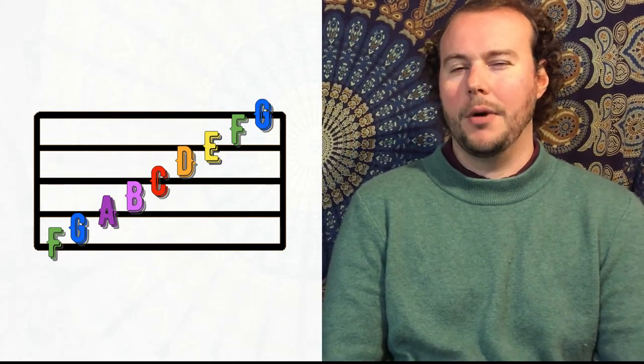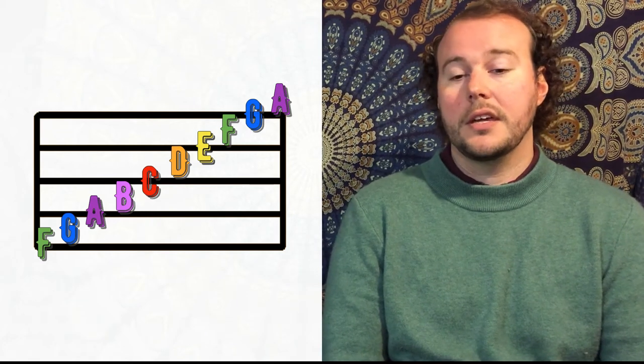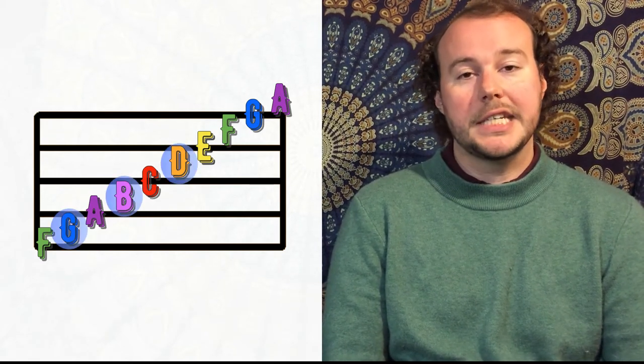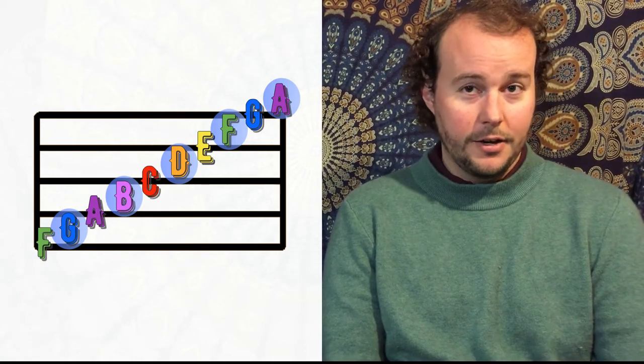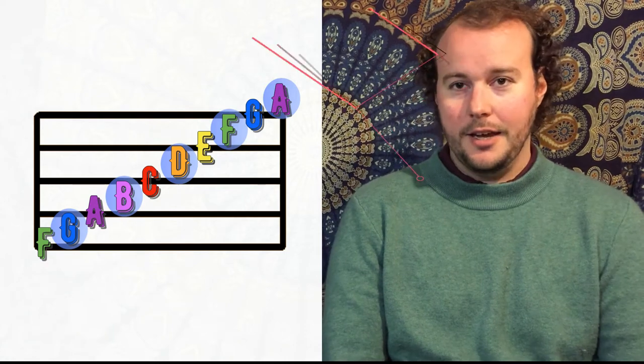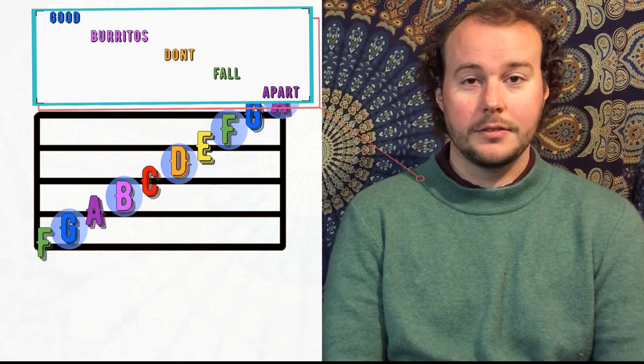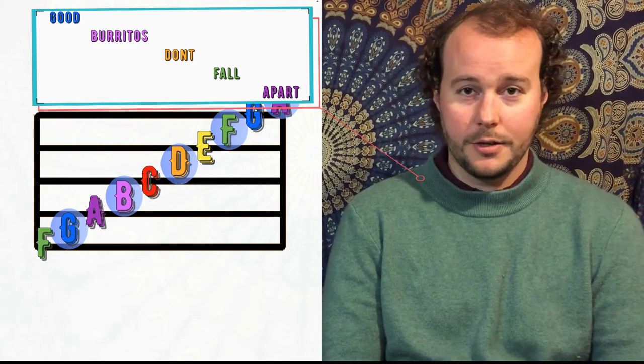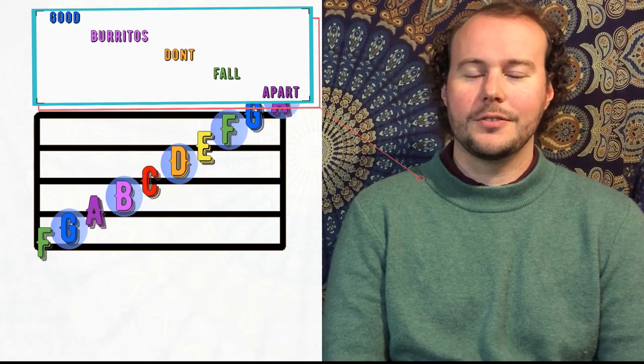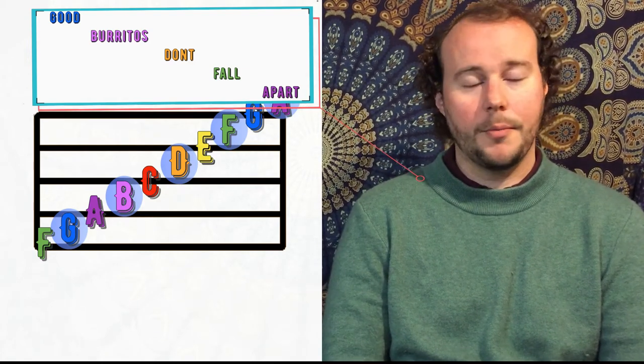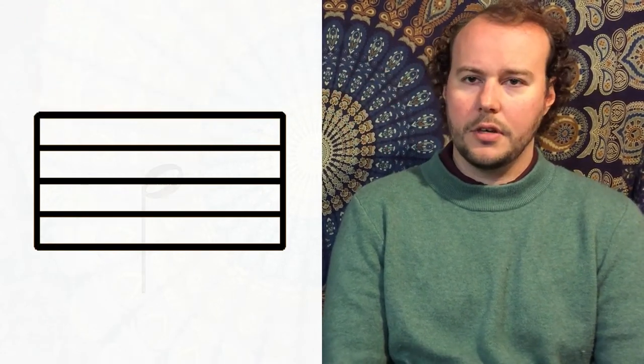If you add in the space above the top line, that is your open A string on your instrument. So if you think G, B, D, F, A, then instead of girls breathe dragon fire, you want something for A. So I like to say good burritos don't fall apart. Right? Nobody likes a burrito that falls apart. It's okay for tacos, but burritos we want it to not fall apart. So good burritos don't fall apart. Going from the bottom to the top. This will be really memorable if you like burritos.